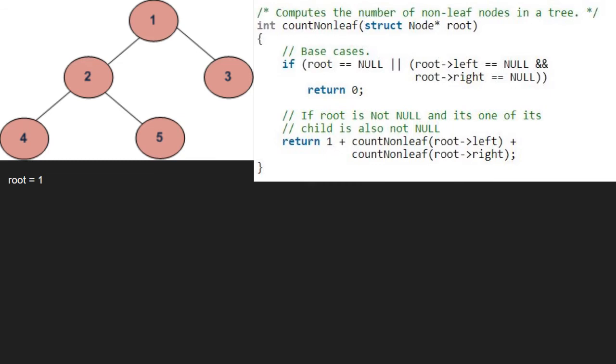Now, we recursively call the left and right subtrees along with plus 1 for the node to be counted. So, first we pass the left child of 1 which is 2 using a call stack.